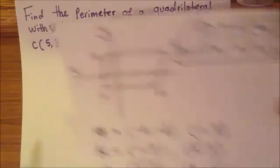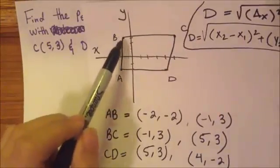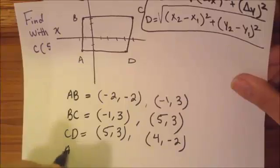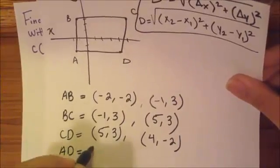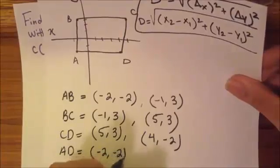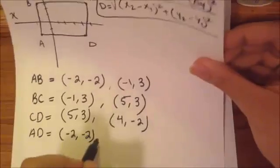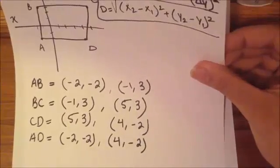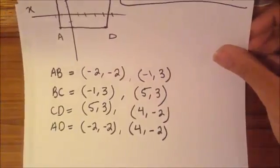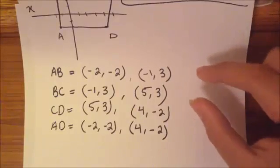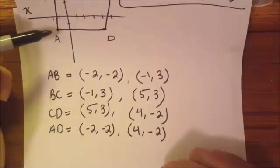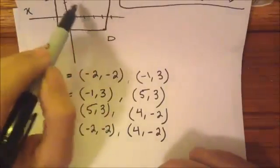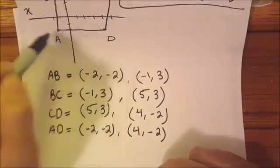For AD: point A is sitting at negative 2, negative 2, and point D is sitting at 4 and negative 2. Now we have to use the distance formula to get the measure of line AB, line BC, line CD, and line AD.